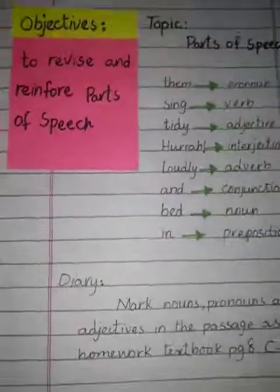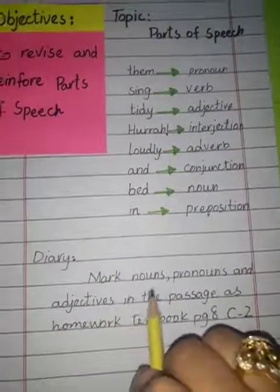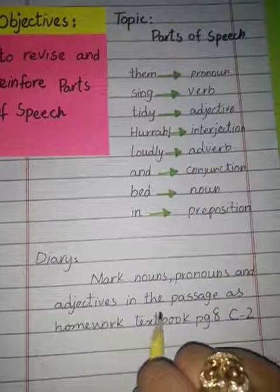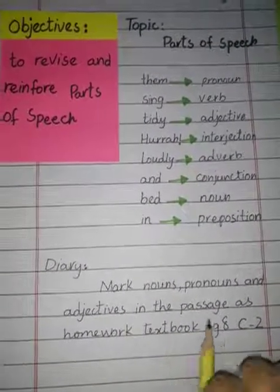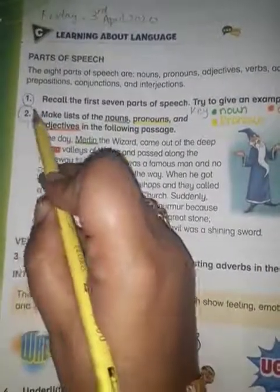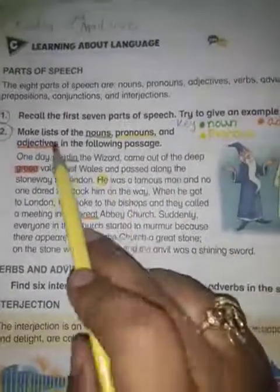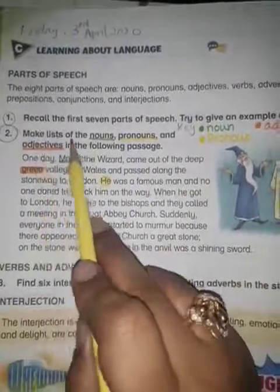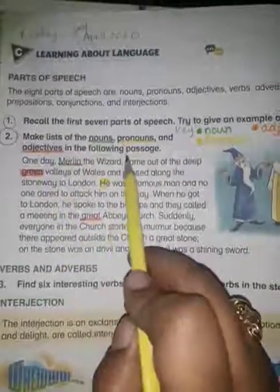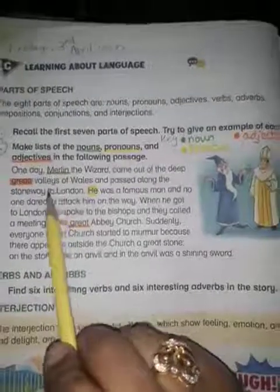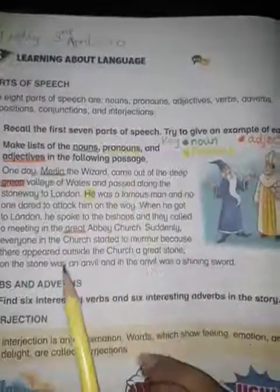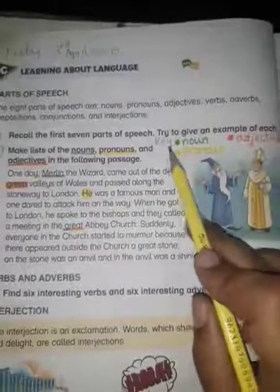Now let's take a look at the diary for today's homework. Mark nouns, pronouns, and adjectives in the page as homework. Textbook page number 8C2 — this part, page number 8, is to be attempted as homework. Let's read the statement first: make lists of nouns, pronouns, and adjectives in the following passage. For this one, I would suggest you to make a key first.